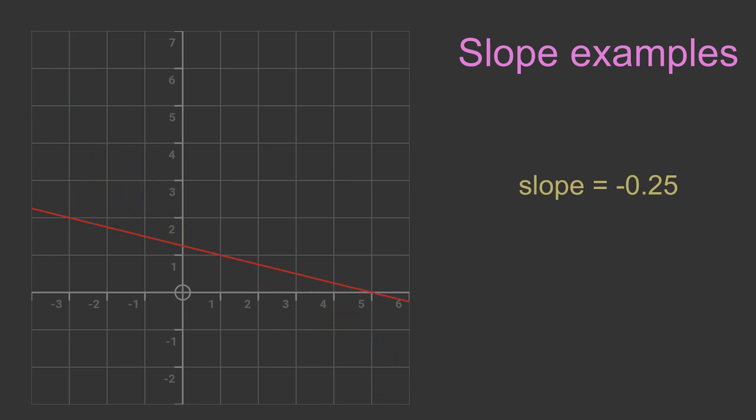This line has a slope of minus 0.25. It still slopes downwards, but the line isn't as steep because the magnitude of the slope is smaller.